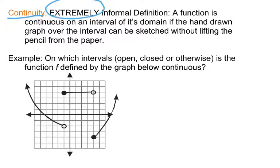Now, the definition you're going to see here is extremely informal. This is nowhere near formal enough to really do a great deal with, but it'll give you an idea of what is meant. So a function is said to be continuous on some interval of its domain if the hand-drawn graph over the interval can be sketched without lifting the pencil from the paper. And you can tell from reading that that is truly, truly informal. It doesn't even sound like math, but it will give us an idea.